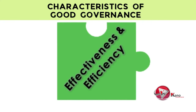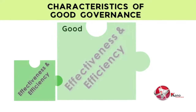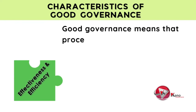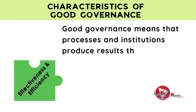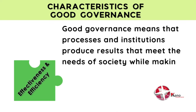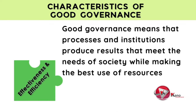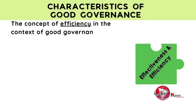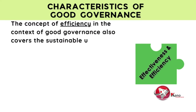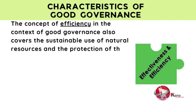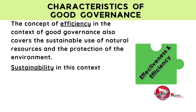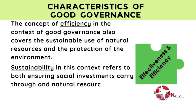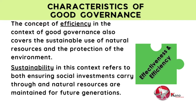Good governance further ensures the effective and efficient use of public resources. Essentially, good governance means that processes and institutions produce results that meet the needs of society while making the best use of resources at their disposal. The concept of efficiency in the context of good governance also covers the sustainable use of natural resources and the protection of the environment. Sustainability refers to both ensuring social investments carry through and that natural resources are maintained for future generations.